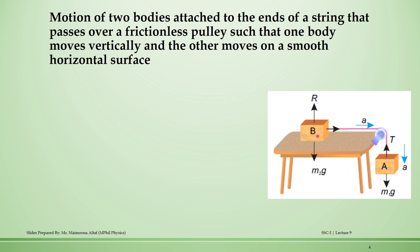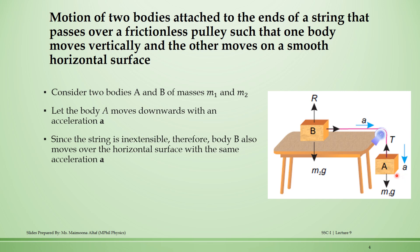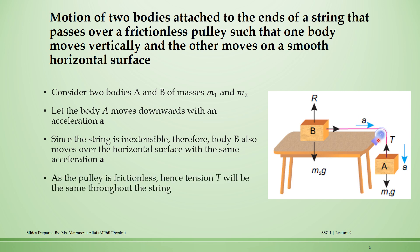Let's consider two bodies A and B having masses M1 and M2. Body A is connected over a pulley through an inextensible string and body B is placed on the table. Body A moves downward with acceleration A. Since the string is inextensible, body B also moves with the same acceleration A horizontally on the table. The pulley is frictionless, so the tension in the string remains the same throughout.